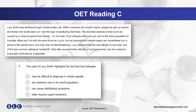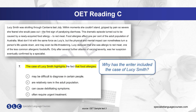Let's take a look together. The question states: 'The case of Lucy Smith highlights the fact that food allergies...' So why has the writer included the case of Lucy Smith? What does it tell us about food allergies? The answer options are: A — allergies may be difficult to diagnose in certain people; B — they are relatively rare in the adult population; C — they can cause debilitating symptoms; and D — they often require urgent treatment.